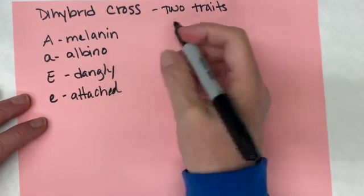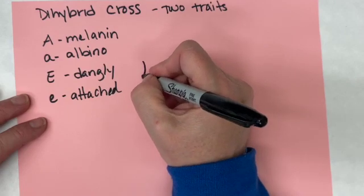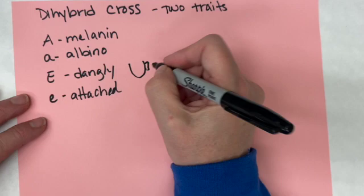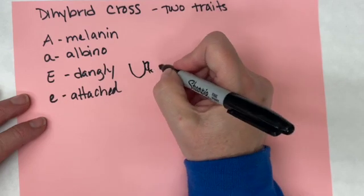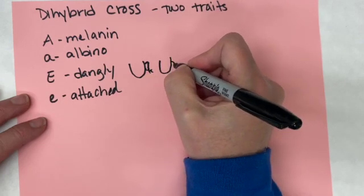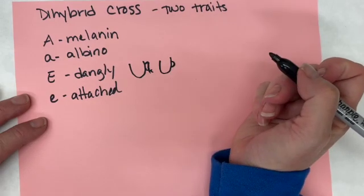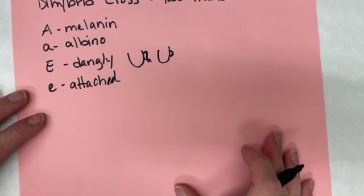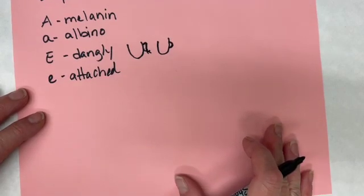So it turns out that dangly earlobes is dominant and attached earlobes is recessive. If you don't know what I'm talking about, if this was a face—I'm not the best artist—but if this is a face, an earlobe that dangles would have a little earlobe down there versus if it's attached that ear kind of goes straight into the head like that.